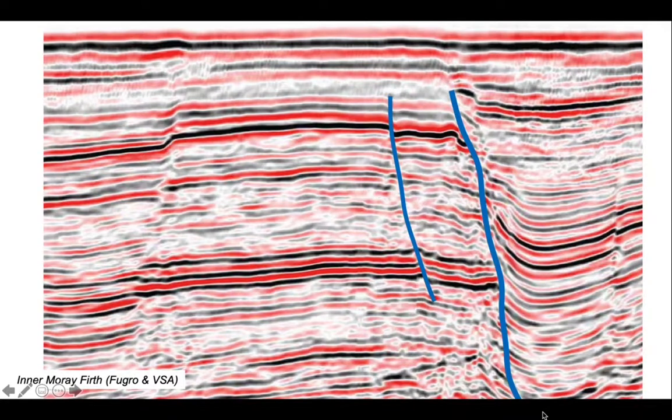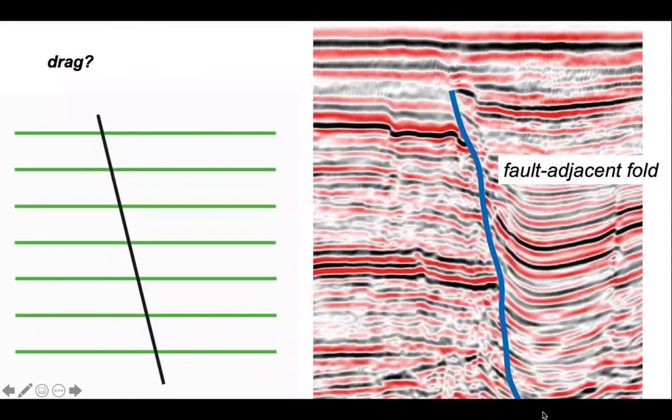So there's another fault next door. An interesting feature of this is the folding adjacent to it. These features are classically termed drag folds, and I'm putting a question mark on that. So let's think about how drag might develop. What that means is that we have a fault fully developed through the section, and then we move on the fault and then the rocks fold because the fault is sticky.